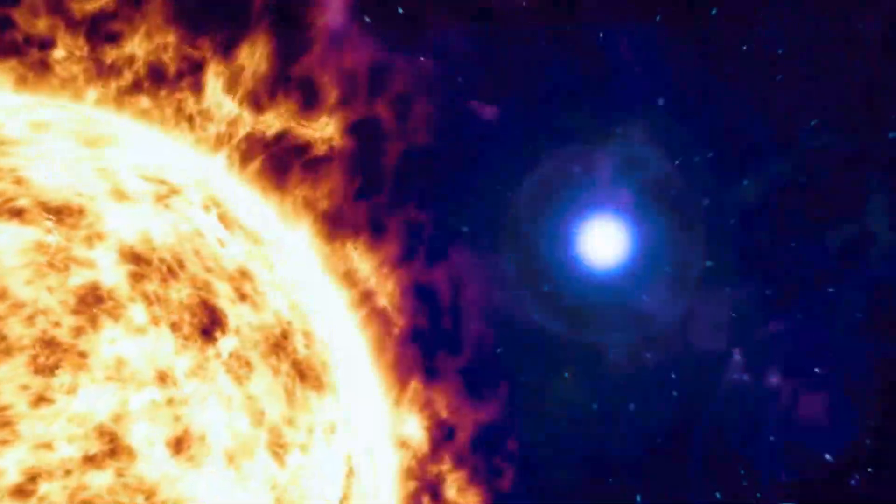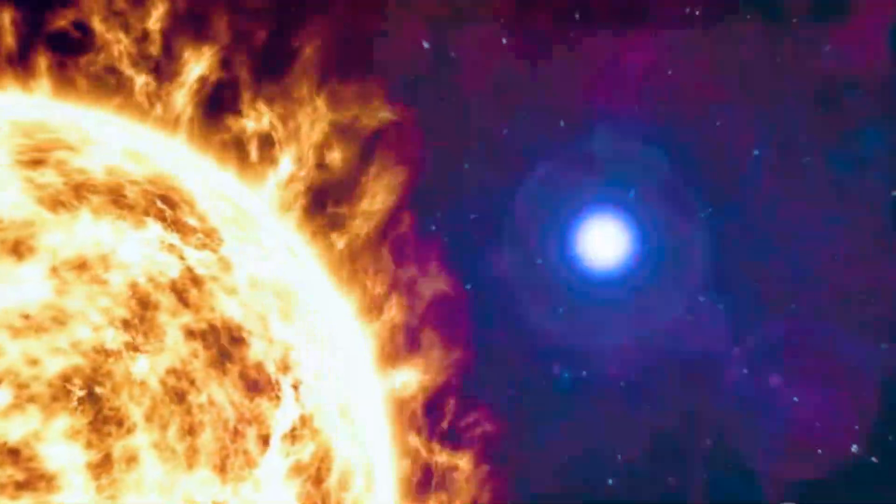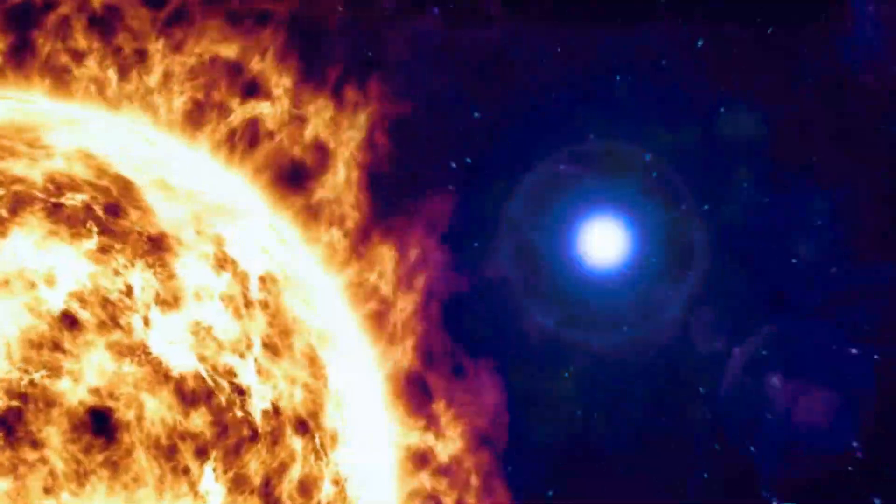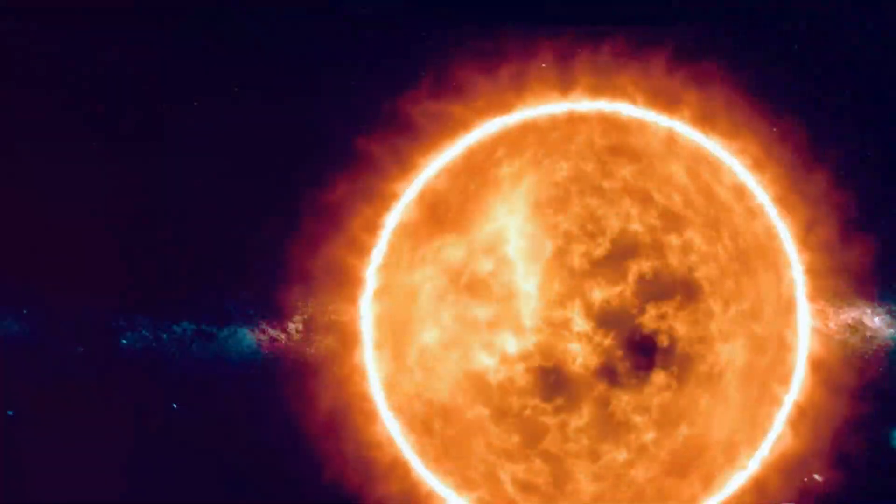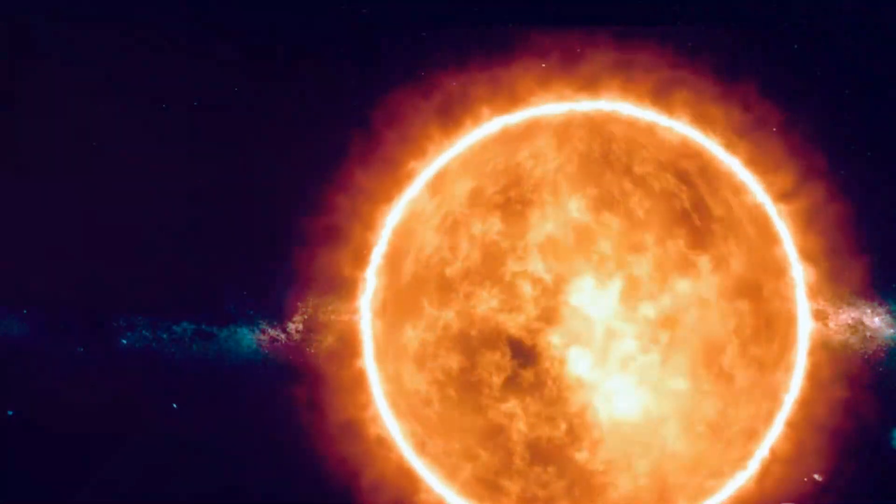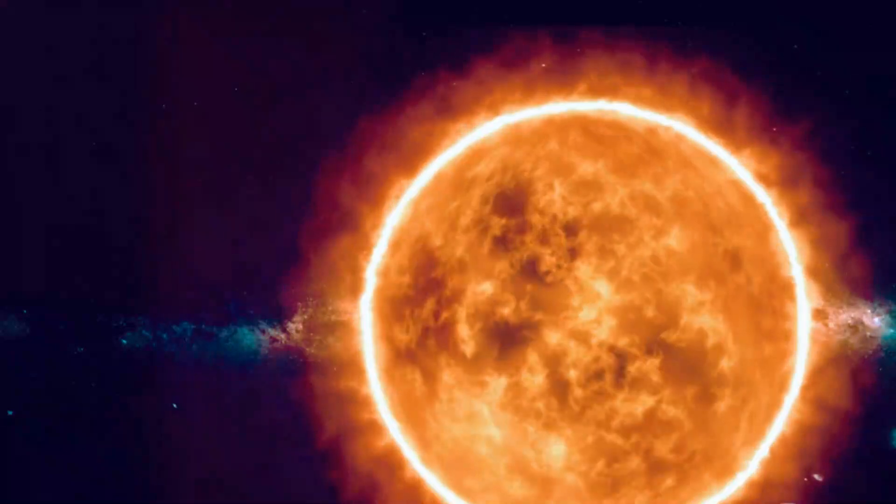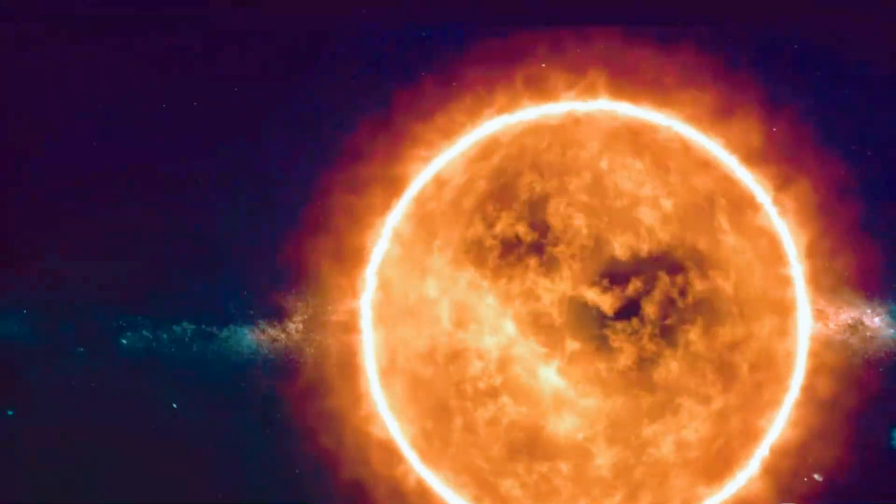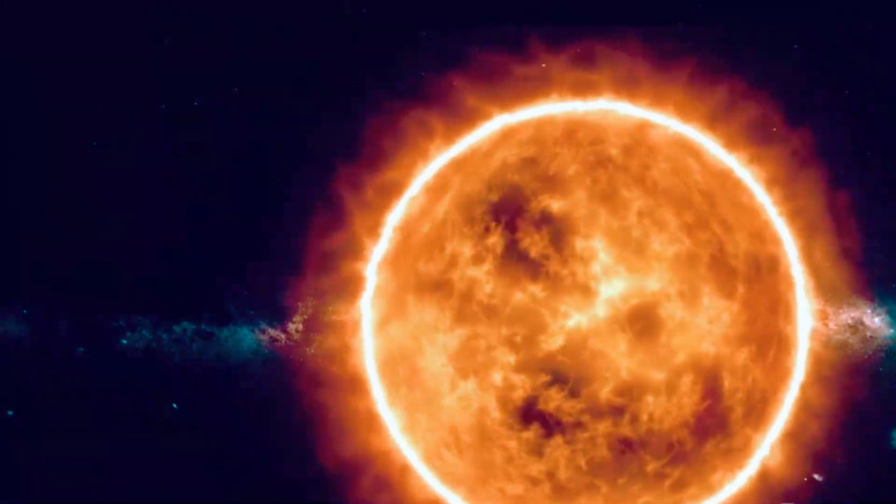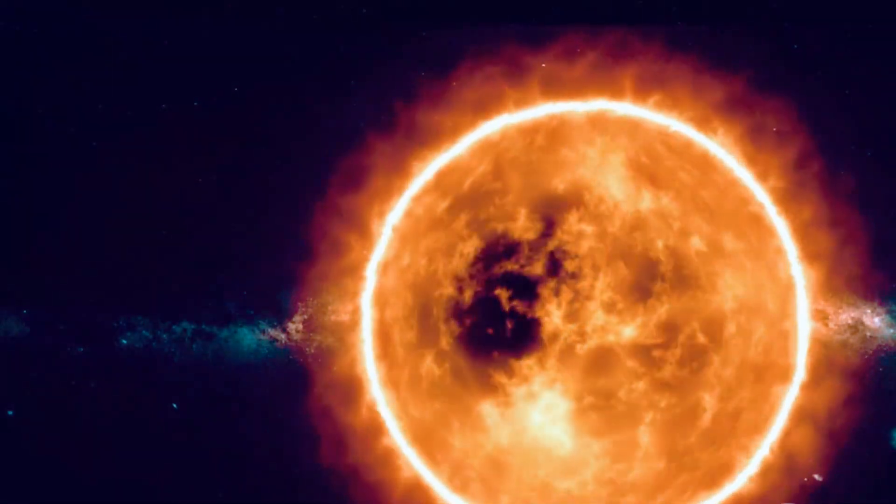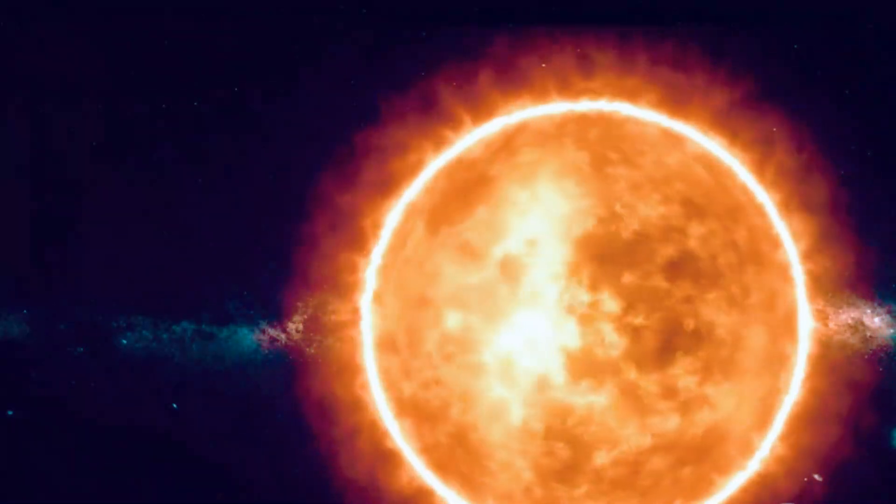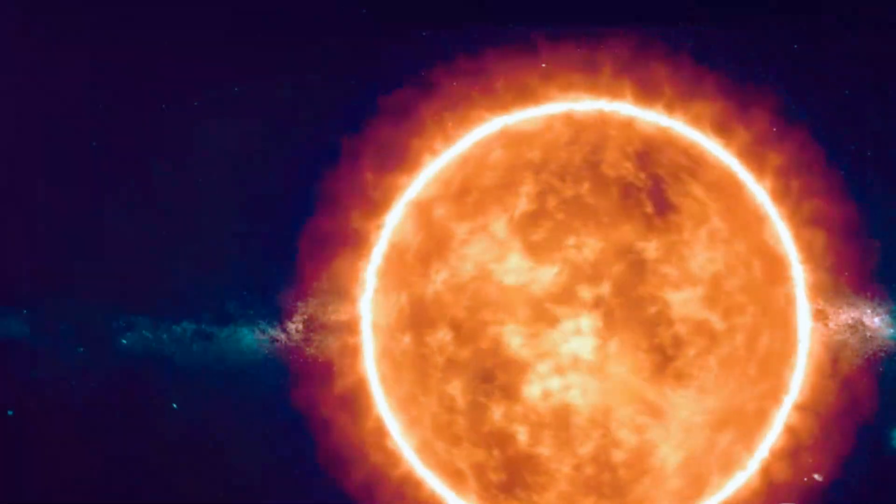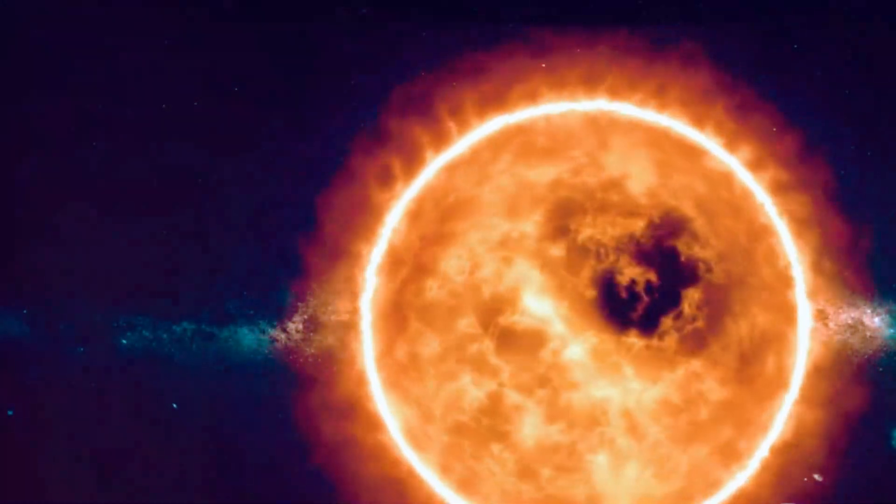While our own Sun is not massive enough to experience a similar fate, understanding the life cycle of stars like UY Scuti helps us appreciate the delicate balance that governs our own star's existence. Our Sun, a relatively small and stable star, will eventually become a red giant and shed its outer layers, leaving behind a white dwarf. This process will take billions of years, giving life on Earth plenty of time to adapt or find new homes in the cosmos.